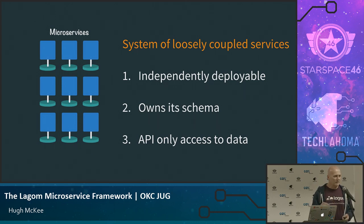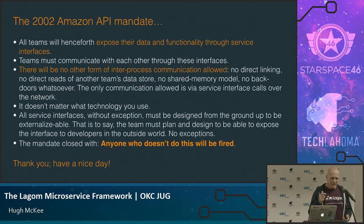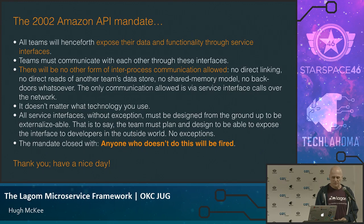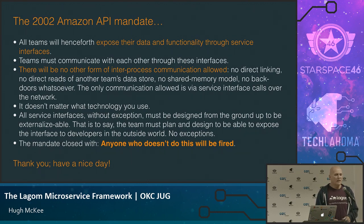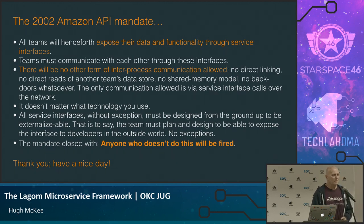To give you an idea how important some people take this — there was a mandate from Amazon back in 2002 that basically said the only way services interact with each other is through an interface, through an API. No cheating — there are no back doors, no other way. And the final rule: if you don't do this, you're fired. This is how seriously they took it. It was from Jeff Bezos in 2002, way before the term 'microservice' existed.